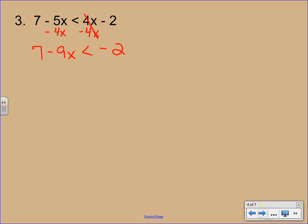And then we want to move the 7 over. So subtract 7 from both sides. Bring down the negative 9x.